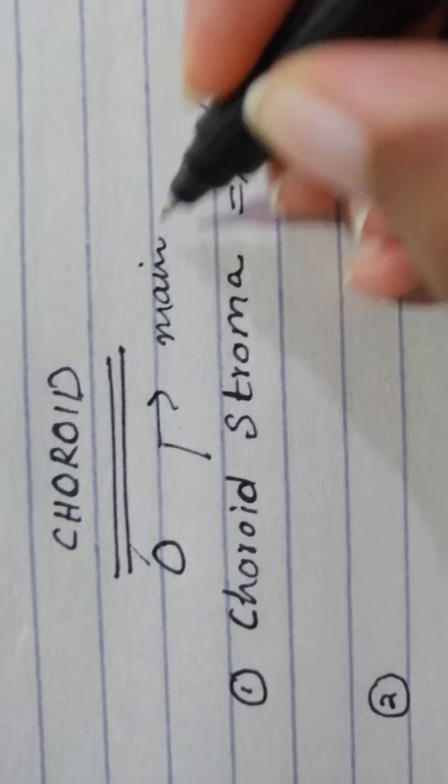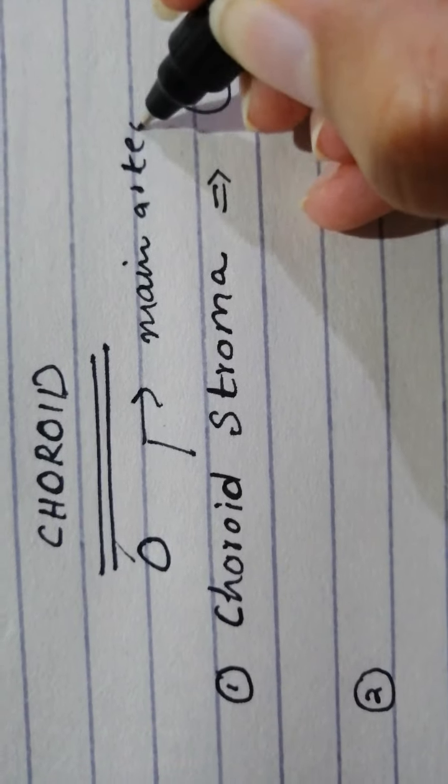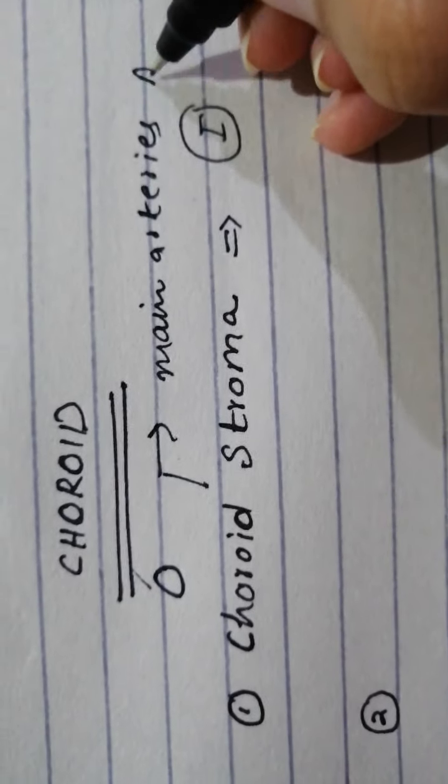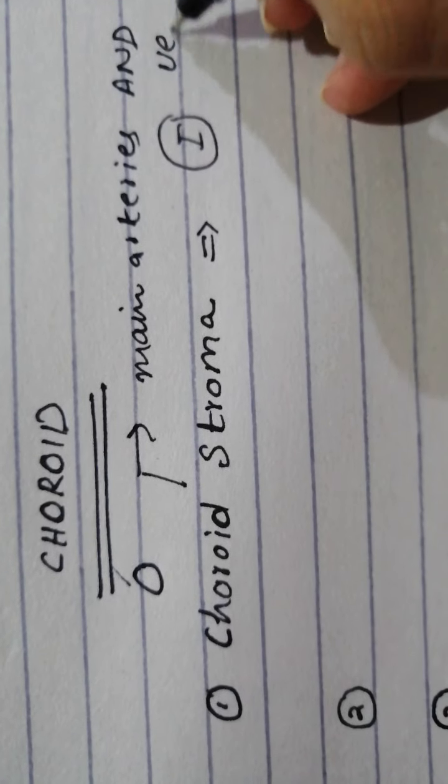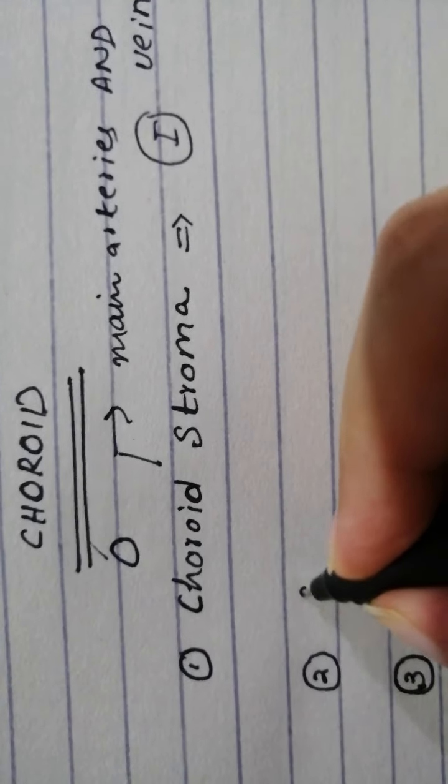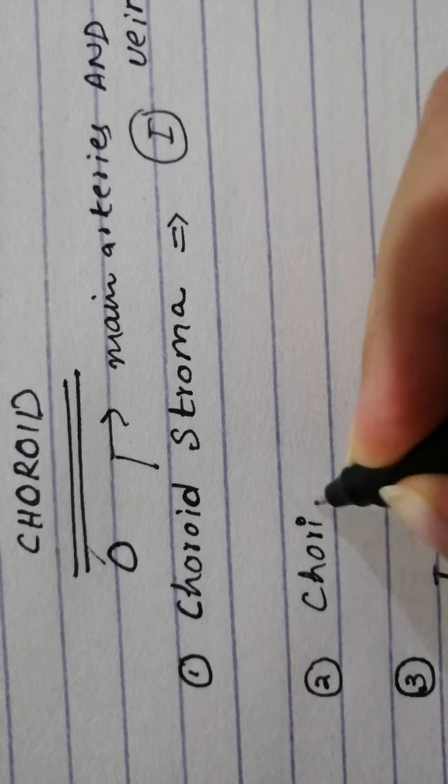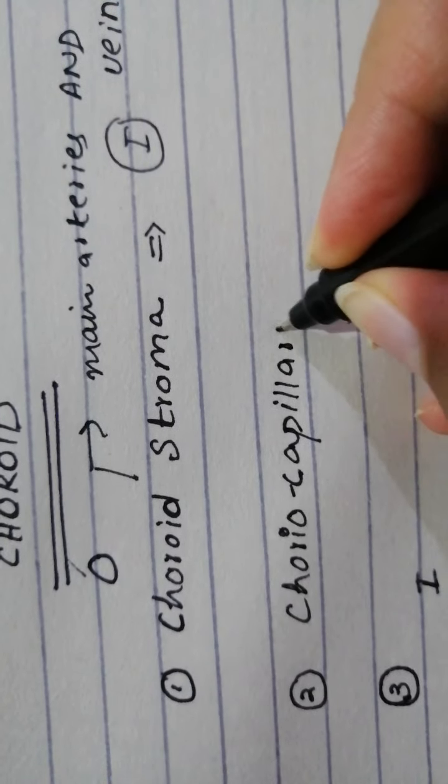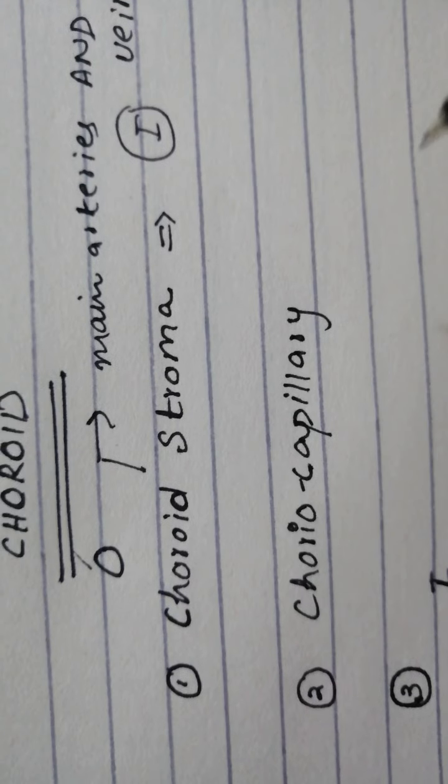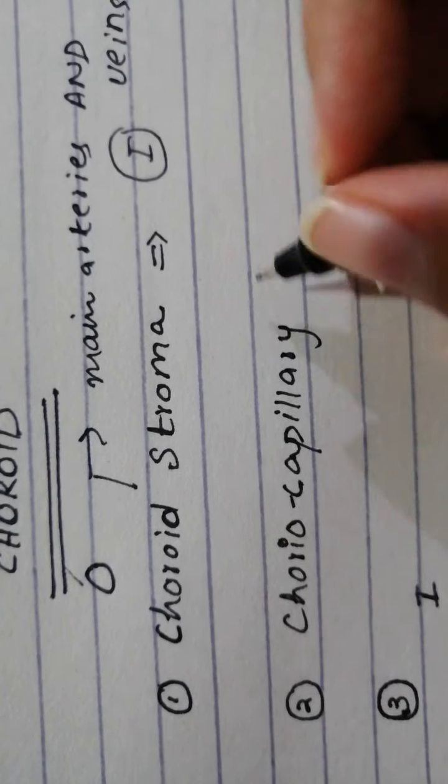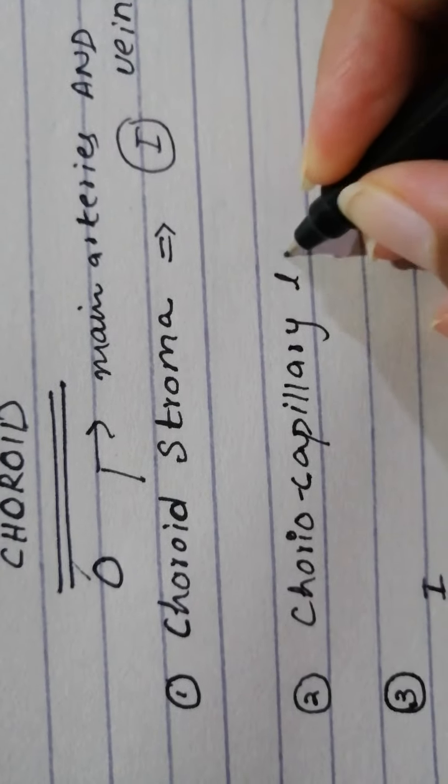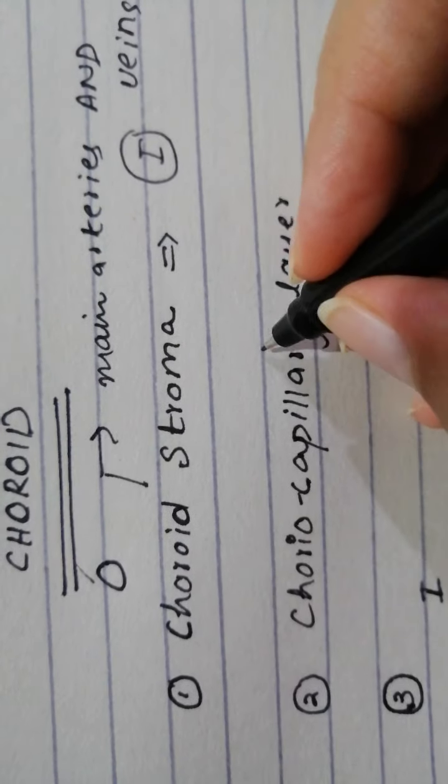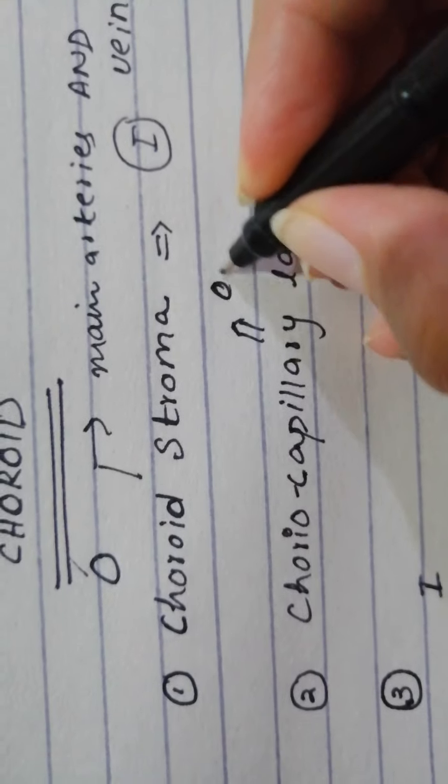Obviously we call it the vascular tunica for some reason. Then we have the chorocapillary layer and this is where there is a plexus of more than normally dilated capillaries, fenestrated capillaries. And this is responsible for the supply of the outer part of the retina.